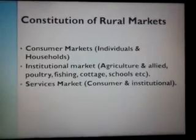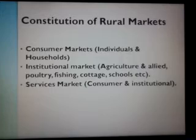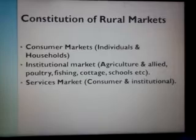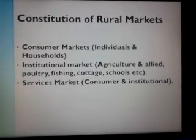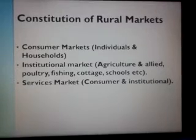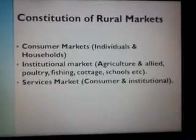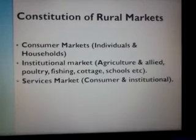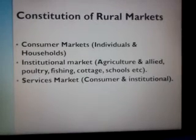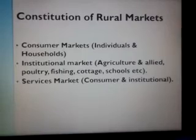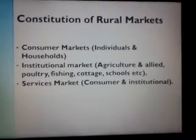Institutional markets are where businesses purchase products for use in their operations. In rural areas, these businesses include agriculture and allied activities, poultry industry, fishing industry, cottage industries, and schools. Products marketed to these sectors include tractors, threshers, harvesters, pump sets, pump set oils, seeds, fertilizers, and pesticides, as well as products for poultry, fishing, and cottage industries.